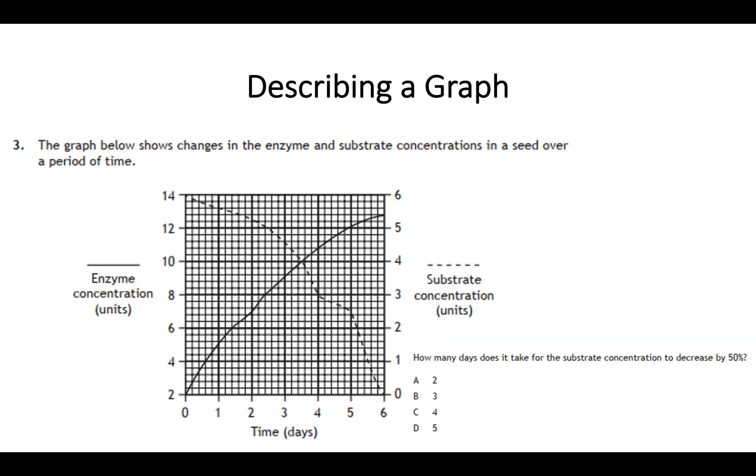For one more example, I'll show you a slightly more complicated example that can trip people up sometimes. You can see straight away we're getting quite comfortable now with line graphs, but you can see there are two lines on this graph and there are also two axes on the side. Again, the most important thing is to first of all read over the question and see exactly what's going on. This graph shows changes in the enzyme and substrate concentrations in a seed over a period of time. What we're changing is the period of time, we can see this down at the bottom on our x-axis. However, there are two things that are being measured: the enzyme concentration and the substrate concentration. So there's now two things to pay attention to.